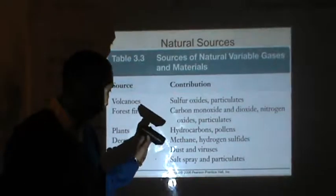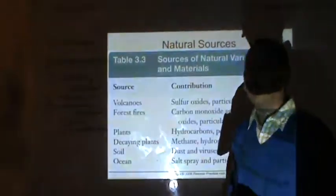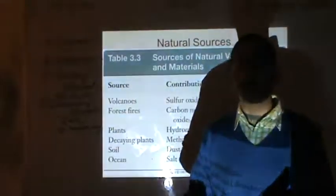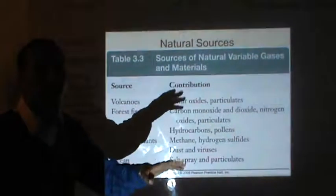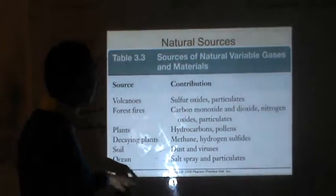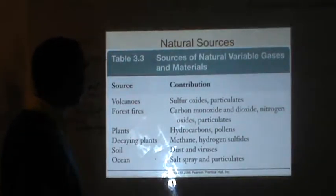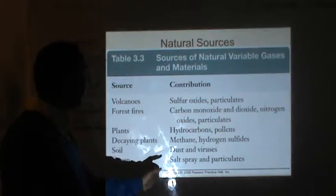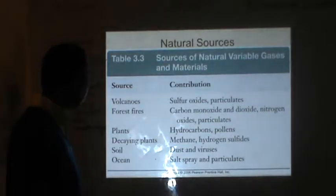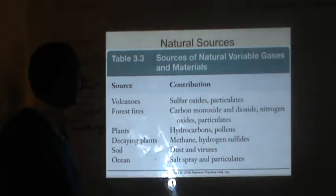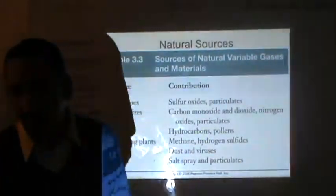There are two broad sources of pollution — the natural source and the man-made source. Natural sources include volcanoes, which emit sulfur oxides and particulates; forest fires, which produce carbon monoxide, carbon dioxide, nitrogen oxides, and particulate matter; plants, which emit hydrocarbons and pollens; decaying plants, which release methane and hydrogen sulfide; soil, which holds dust and viruses; and oceans, which produce salt spray and particulates. These are the natural pollutants released into the air or soil.